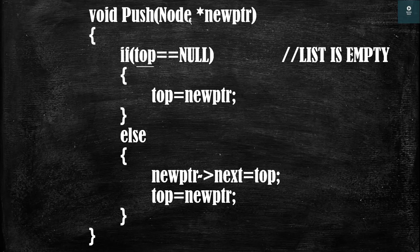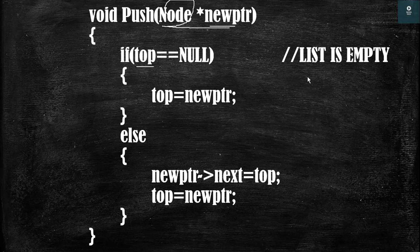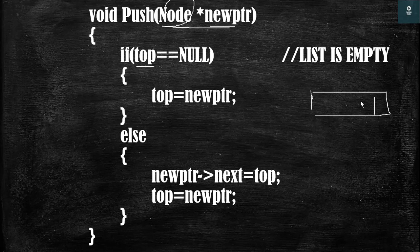In this code we are taking a pointer as an argument of type node, and this pointer's name is newptr. newptr is a pointer that holds the address of the newly allocated memory for the node, that is the address of the element that is to be inserted inside this link stack.